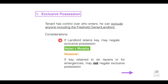There are several considerations to take into account. Firstly, if the landlord or freehold owner retains a key, that may negate exclusive possession, as was held in Aslan v Murphy. However, there is an exception to this rule: if the key was retained to do repairs or for emergency purposes, it may not negate exclusive possession.